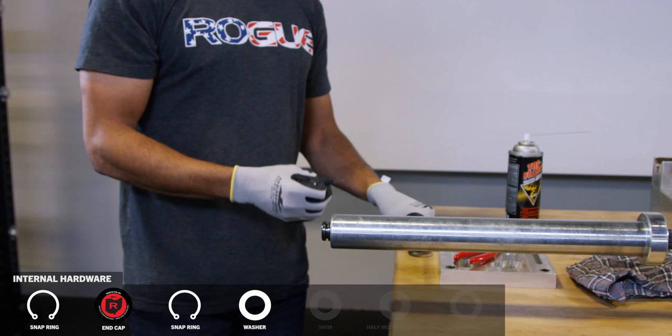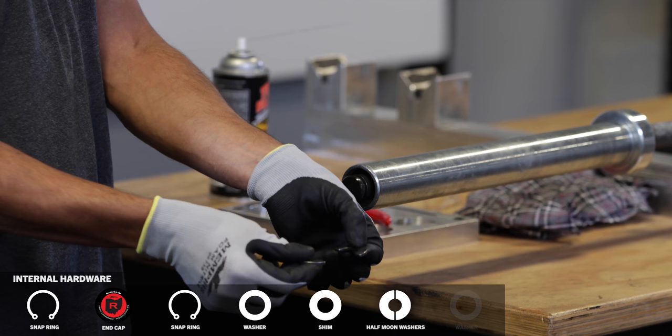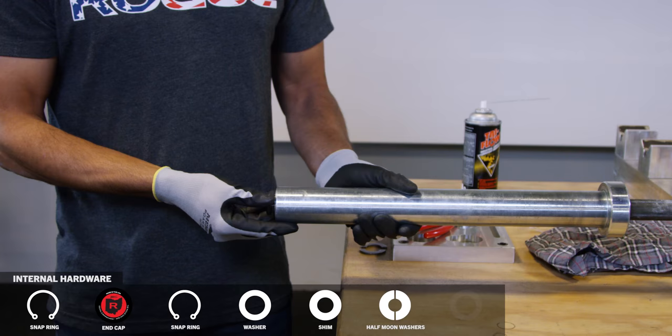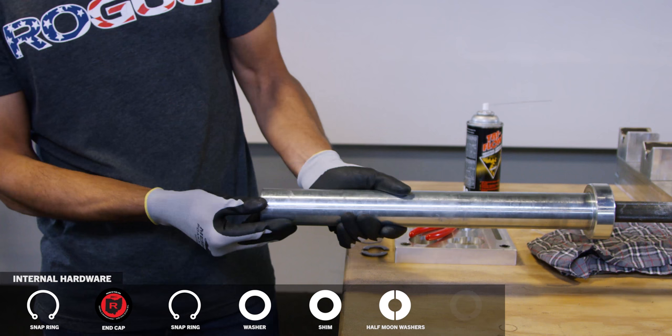So the next thing to come out is a full washer. And then if you have a shim, that's where it'll be. Then the two half moon washers, and then the final full washer.